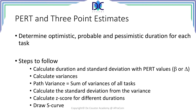PERT and three-point estimate. First, we identify the optimistic, probable, and pessimistic duration of each task. There are some simple steps to follow. First of all, with that information, we can calculate the duration and the standard deviation of every activity.